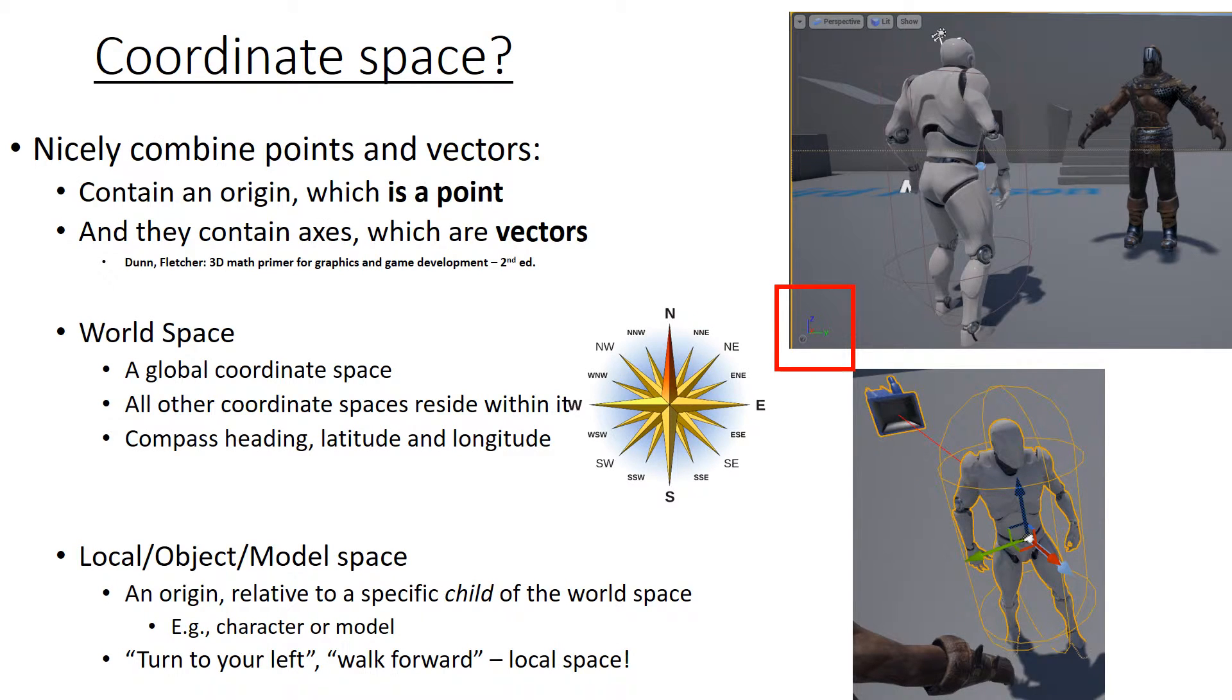In terms of coordinate space, they nicely combine points and vectors. So, for example, all coordinate space have an origin. This is a point. They contain axes, however, and these are vectors.